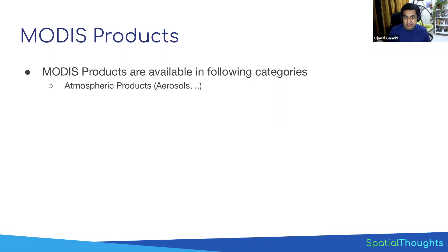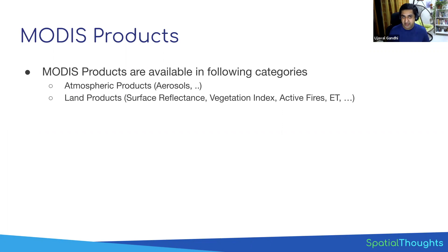These products range across many different categories. For example, atmospheric products: if you're working on air quality, MODIS has a great product called AOT — Aerosol Optical Depth — which lets you measure particle concentration in the atmosphere. There are also land products, including regular surface reflectance data, pre-calculated vegetation indices like NDVI and EVI, fire data from thermal bands to detect thermal anomalies, and evapotranspiration, which is very hard to measure on the ground at scale but available as a pre-computed MODIS product.